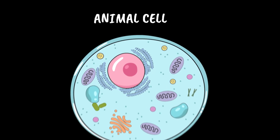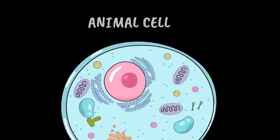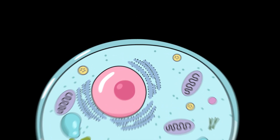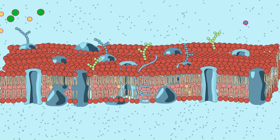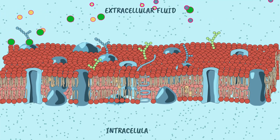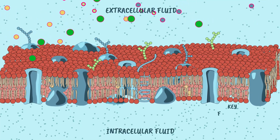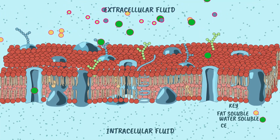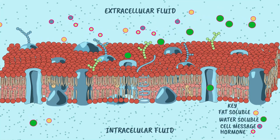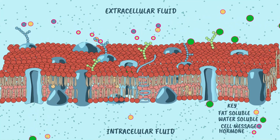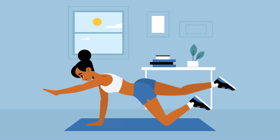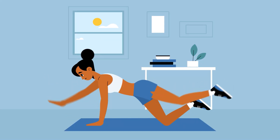This is an animal cell, and one of its standout features is the cell membrane. It's not just a simple wall around the cell — it's active. It controls what comes in and what goes out, and understanding how it works explains some of the body's most critical functions, like how muscles contract and how your brain sends signals.